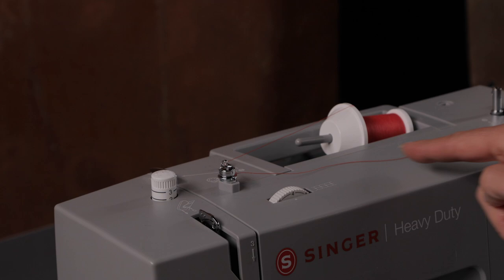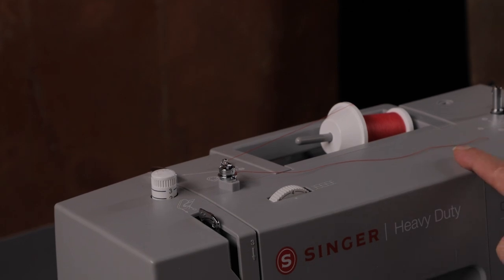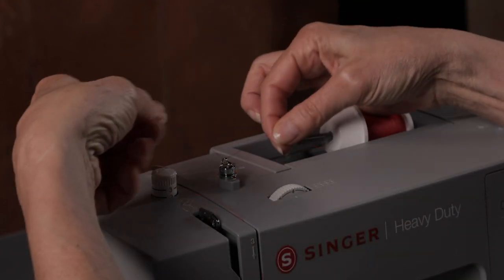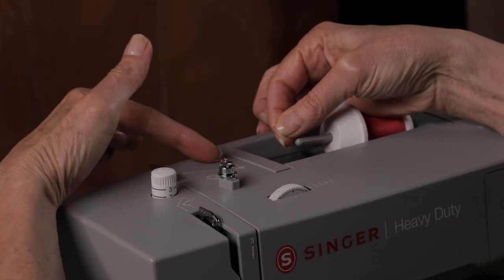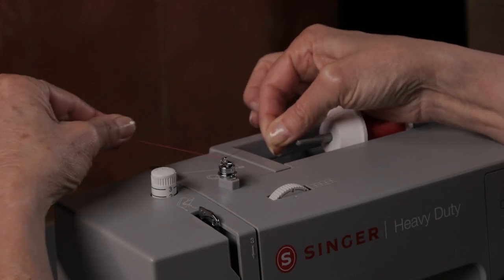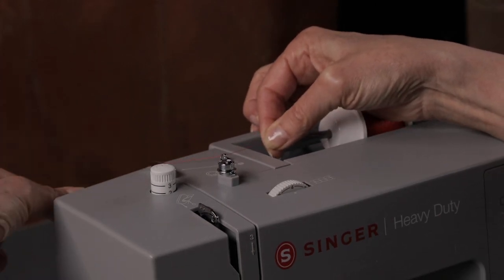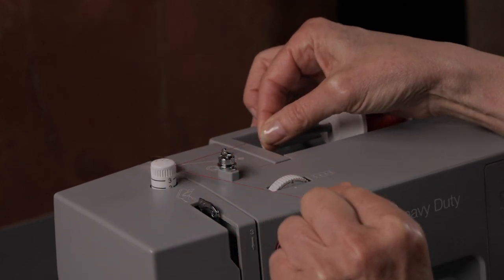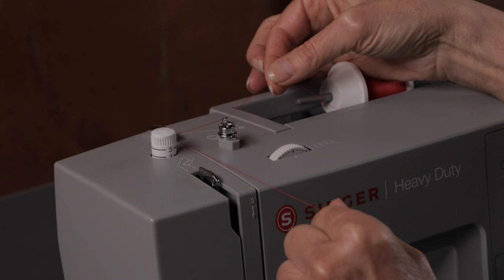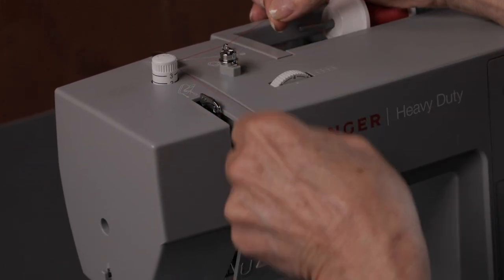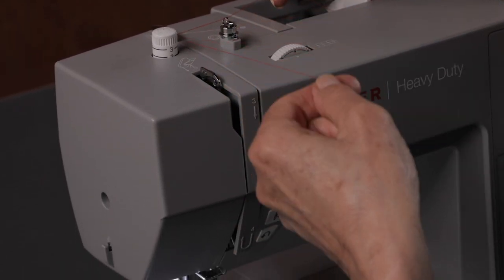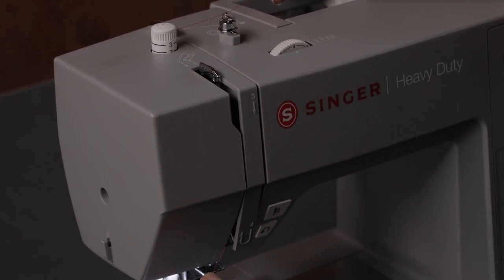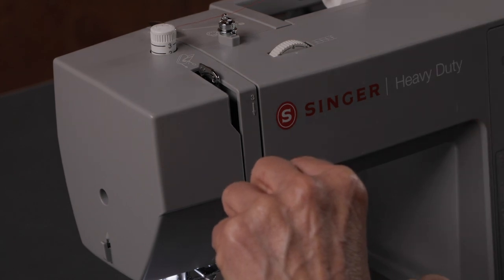After winding a bobbin, the top of the machine probably looks a little bit like this. We're going to remove the thread from the bobbin winding tension disc. If it's not still in this thread guide, make sure it's in thread guide number one there. Bring it into thread guide number two. Keep holding the thread lightly with your right hand and bring this end with your left hand down this channel around the bottom where there's a bit of a U-turn.